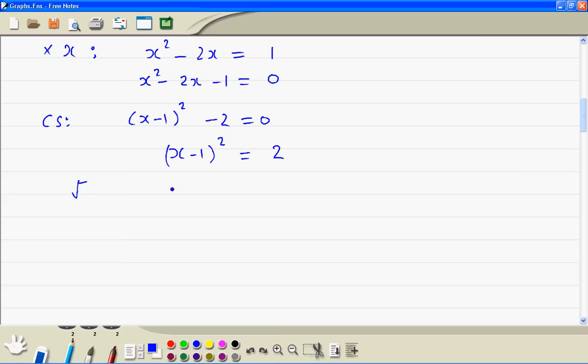Then we take the square root. The right hand side is plus or minus root 2. Now we add 1, so we get 1 plus or minus root 2. So we get two solutions. x is equal to 1 minus root 2, this is a negative answer, and x equal to 1 plus root 2.